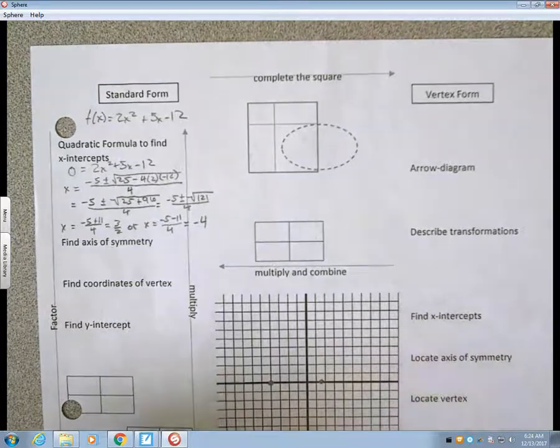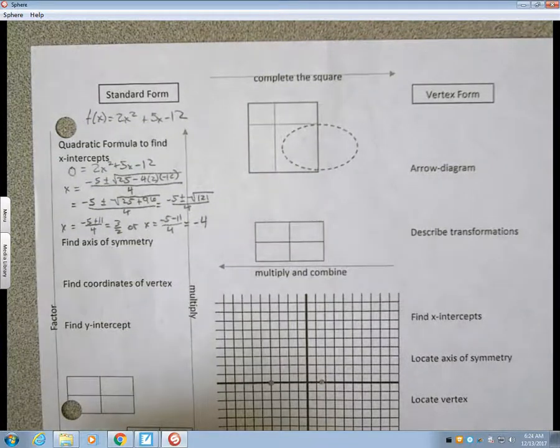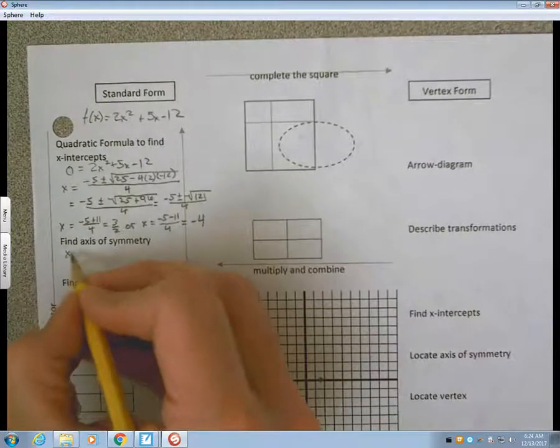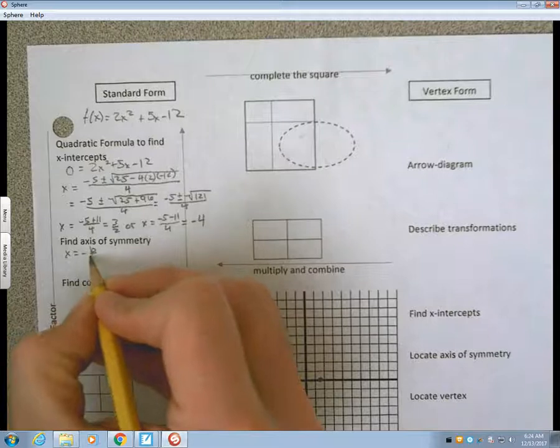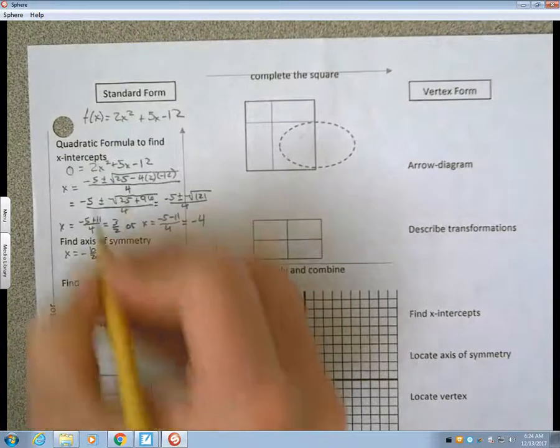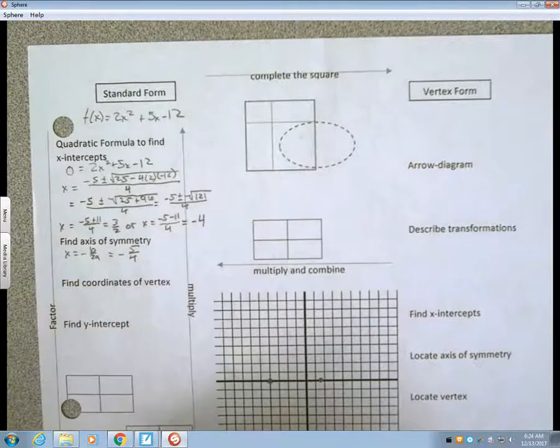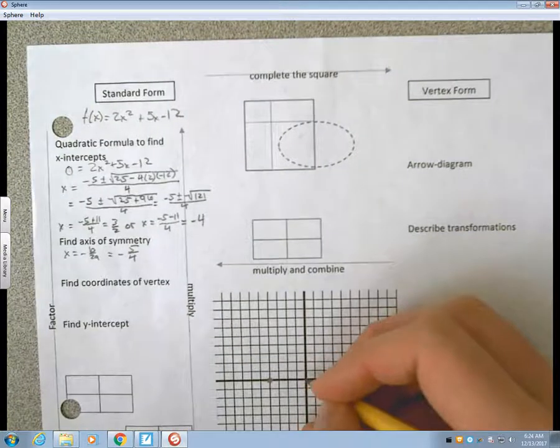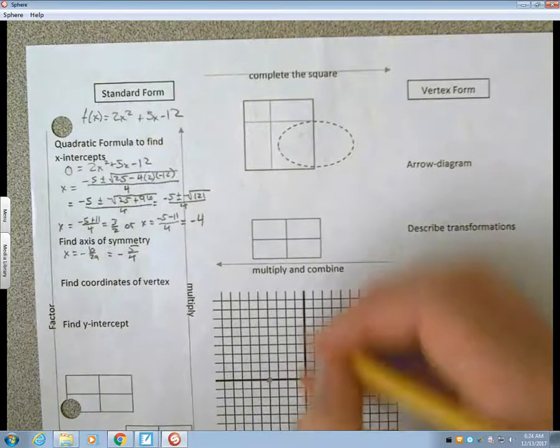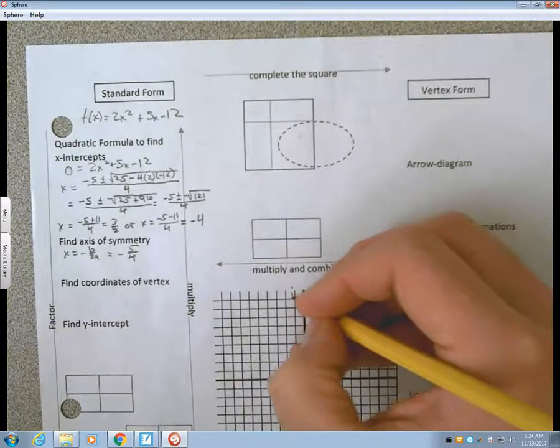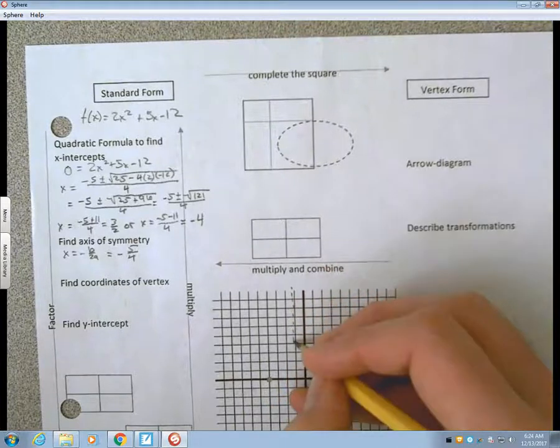The axis of symmetry, we can always find that on a quadratic because it will be at x equals negative b over 2a, which we have already done here once, so negative 5 over 4 is the axis of symmetry. Negative 5 fourths, negative 1 and a quarter is going to be right around here.